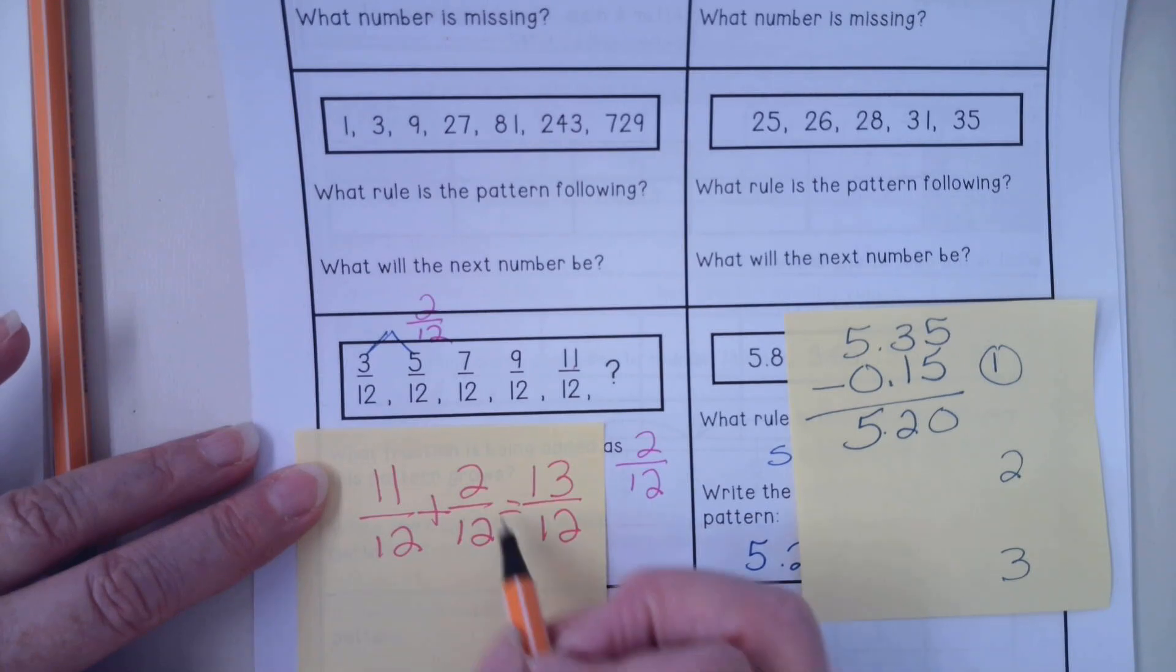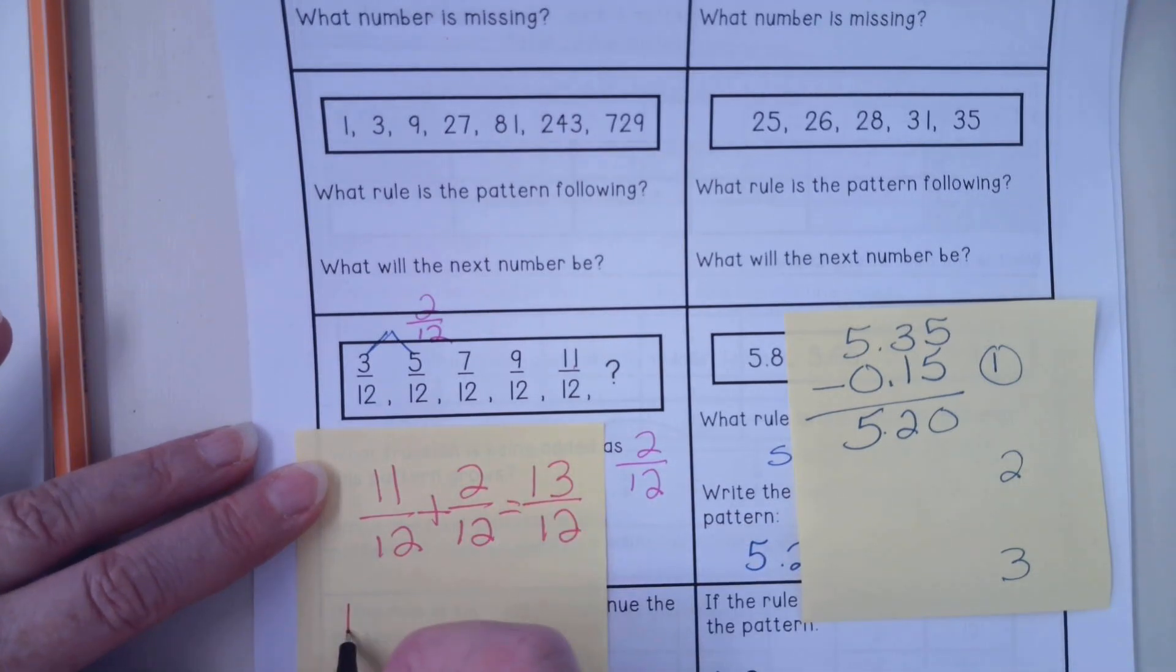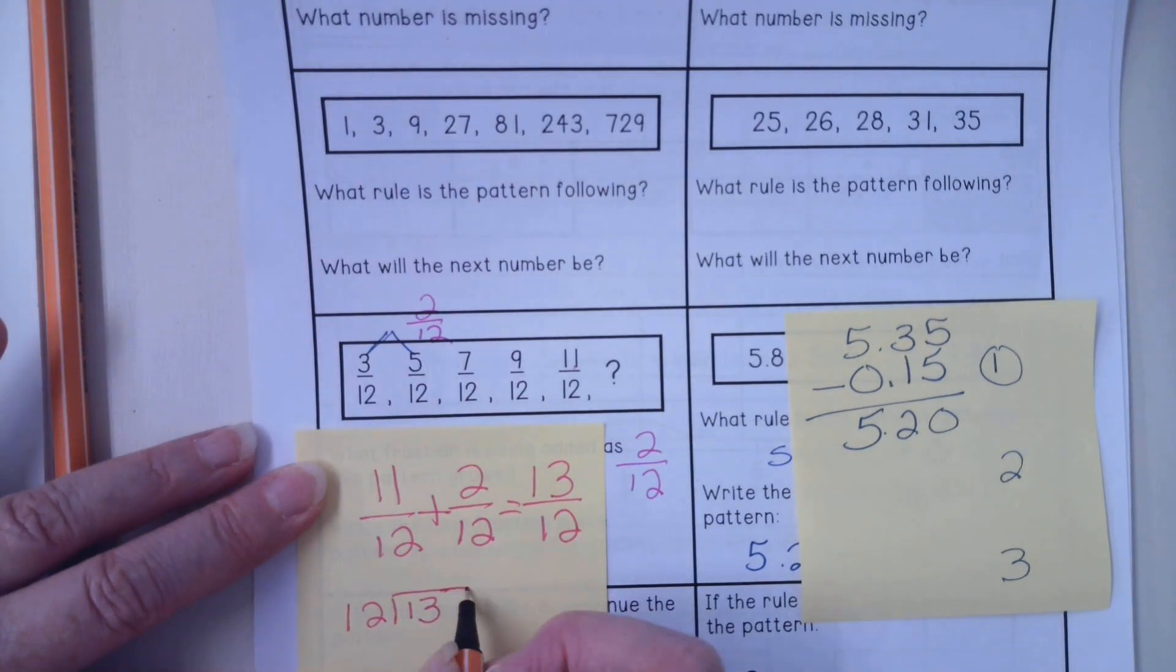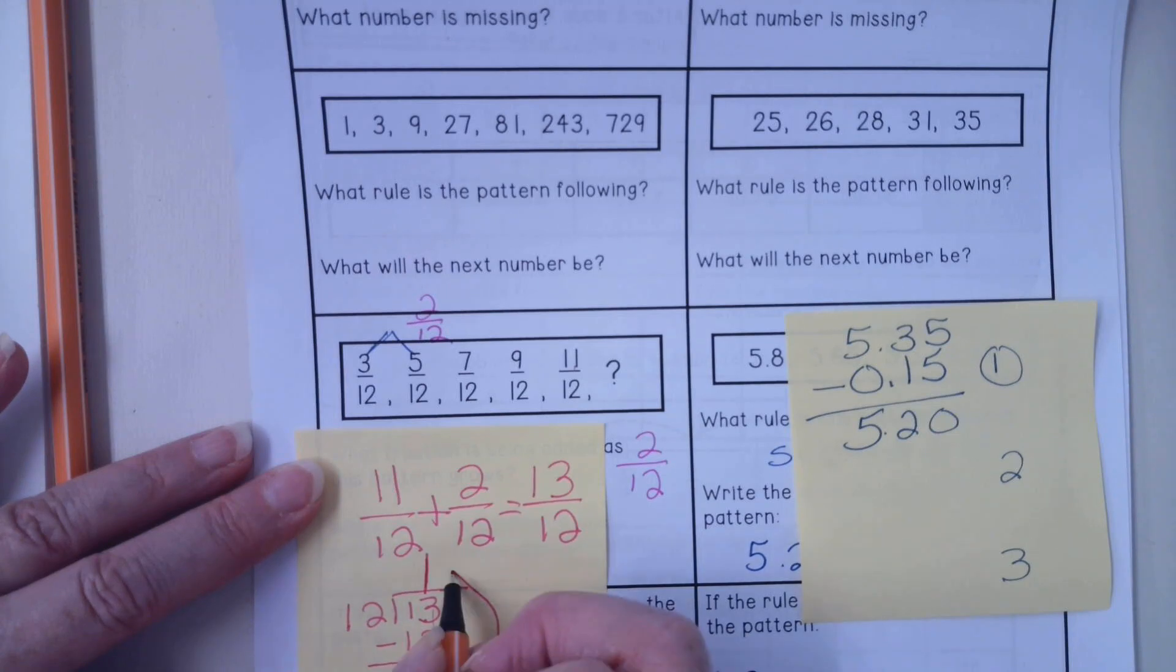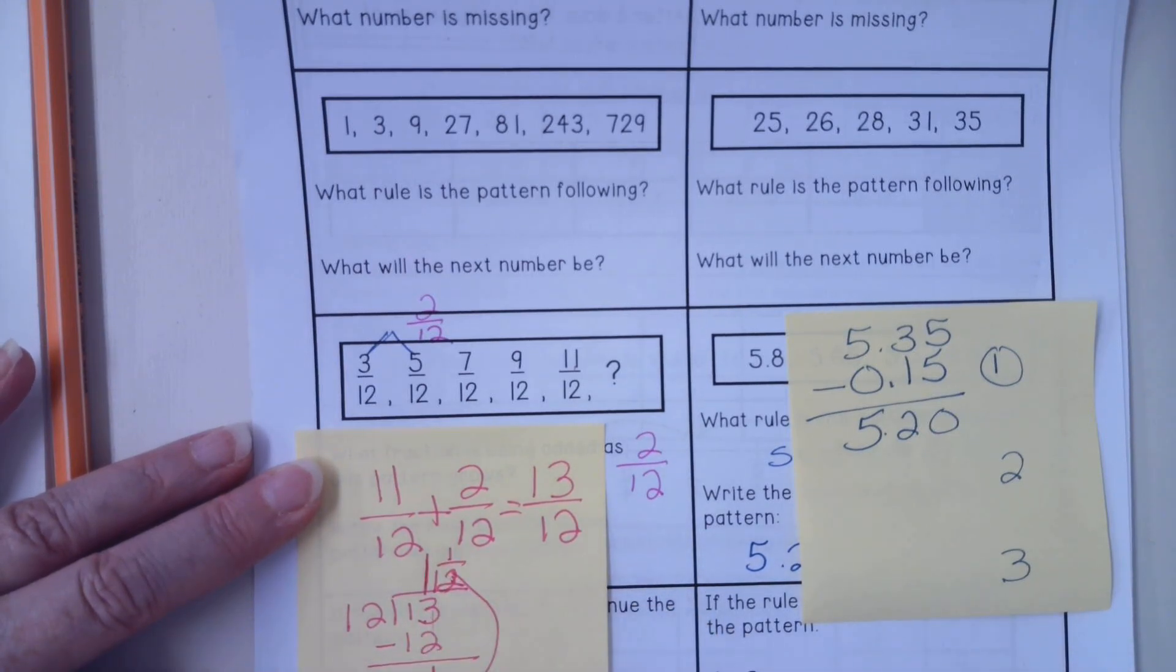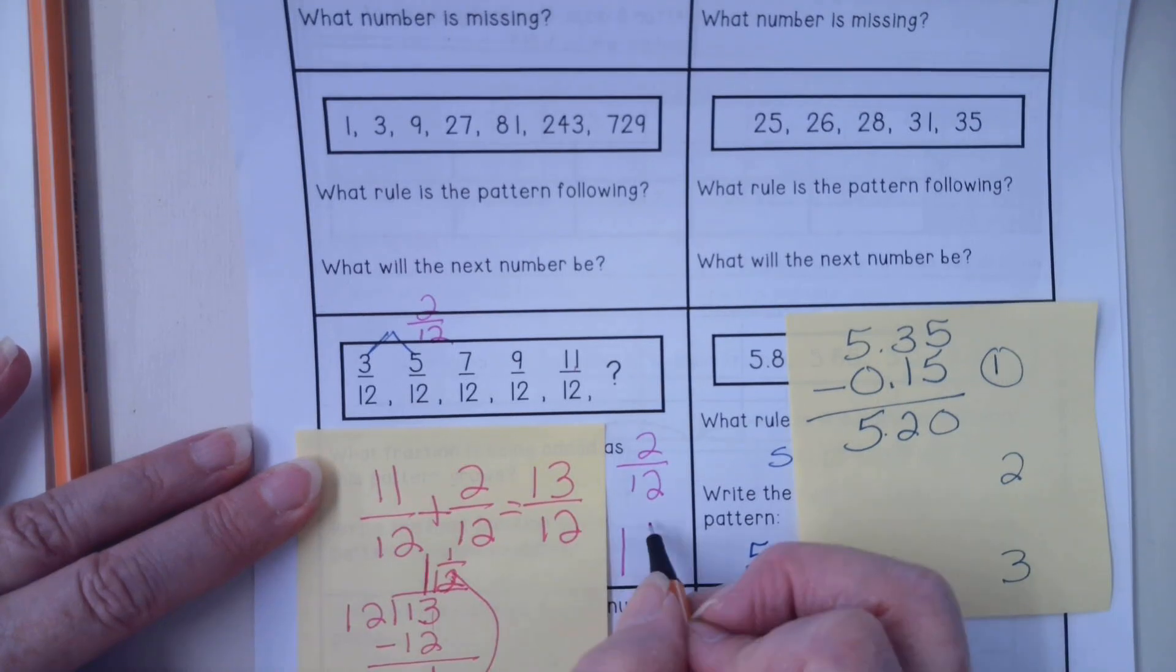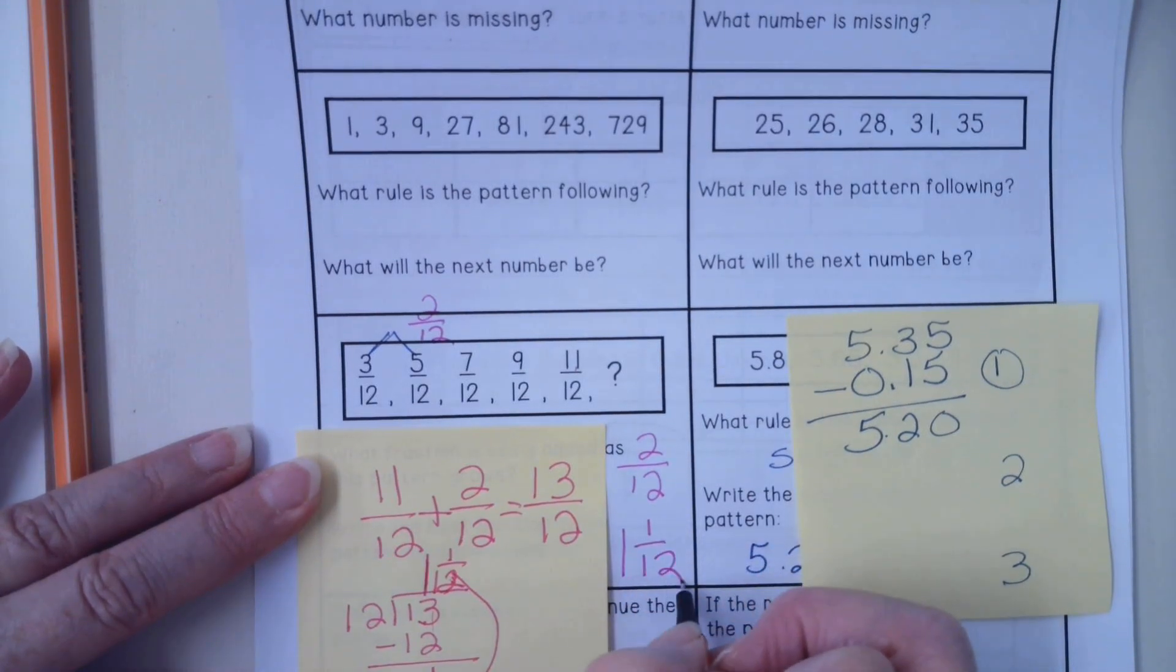To figure out how to divide this out, we do 12 goes into 13, 1 whole time, and then we end up with the remainder of 1 12th. 1 and 1 12th.